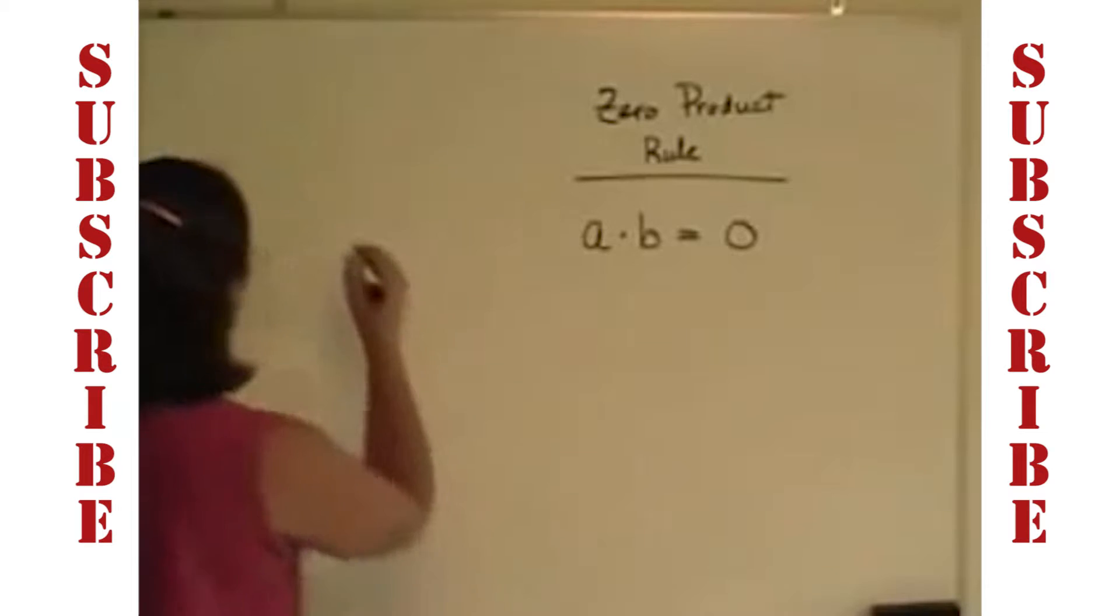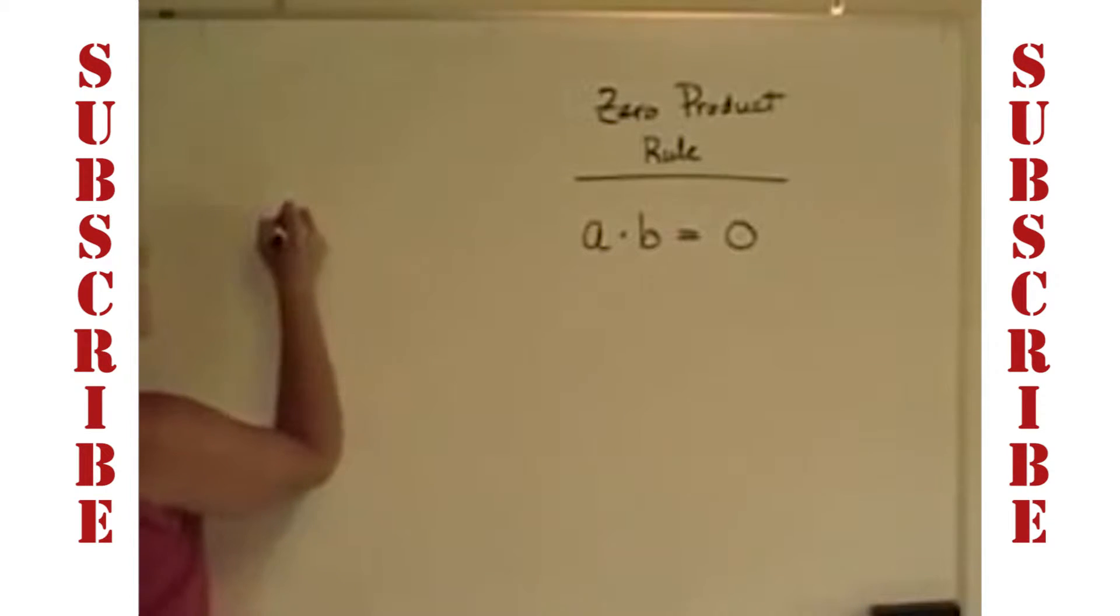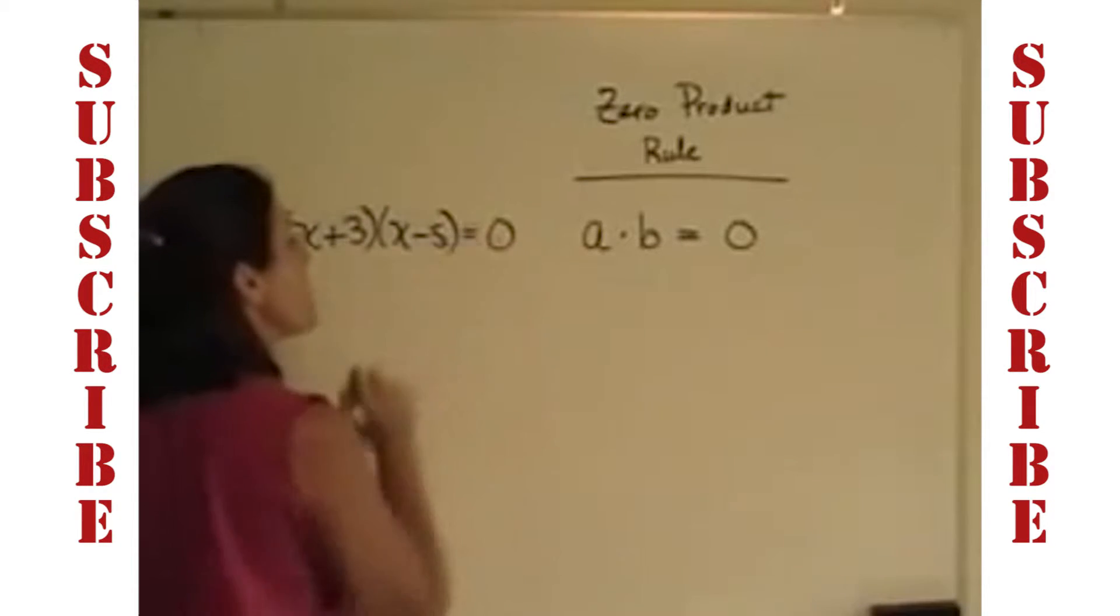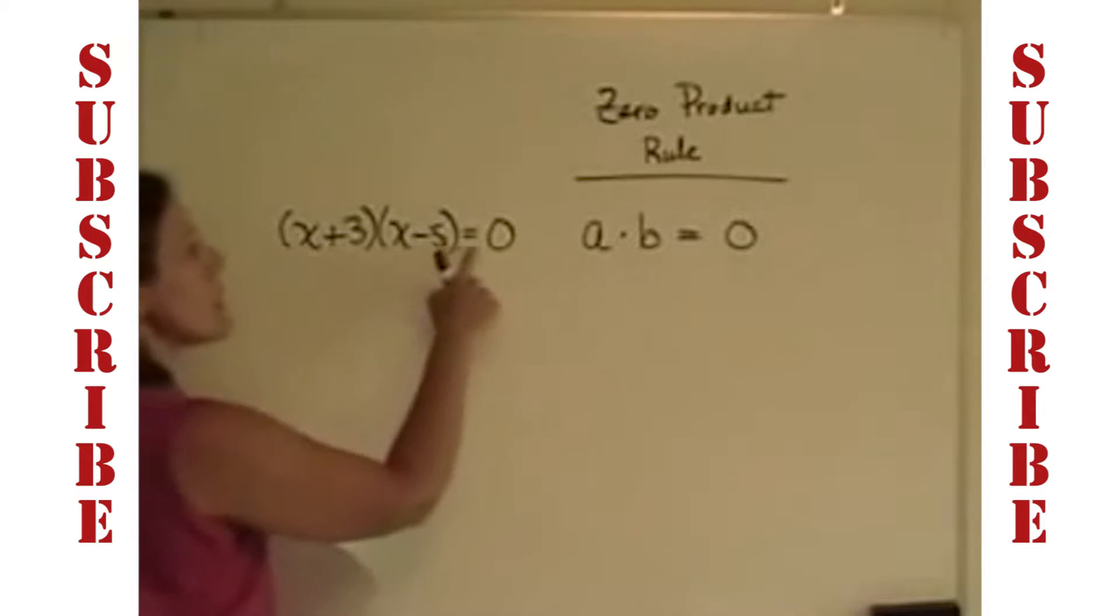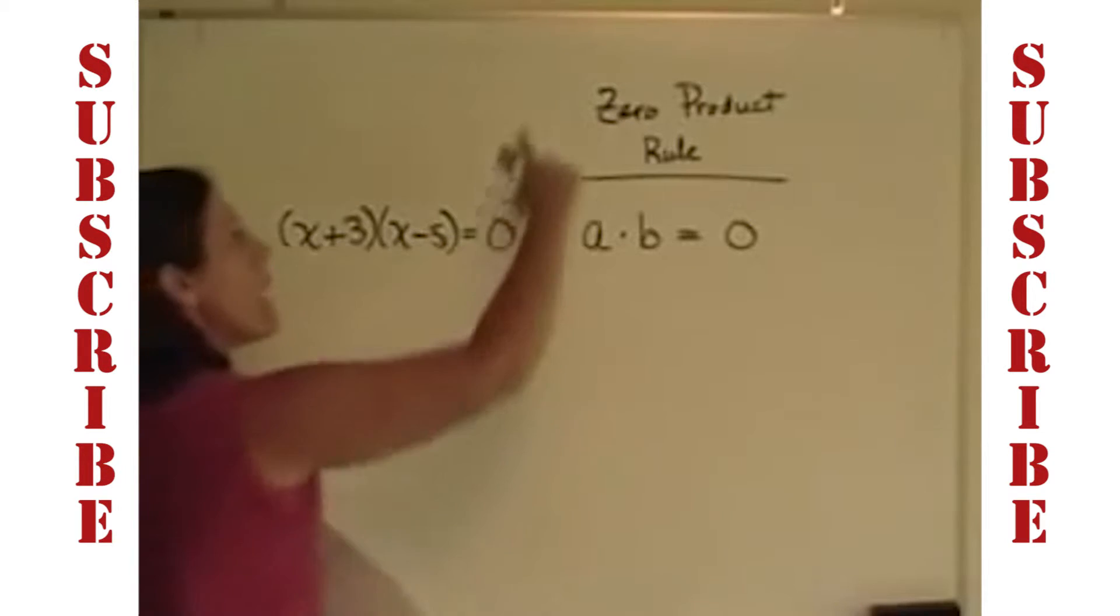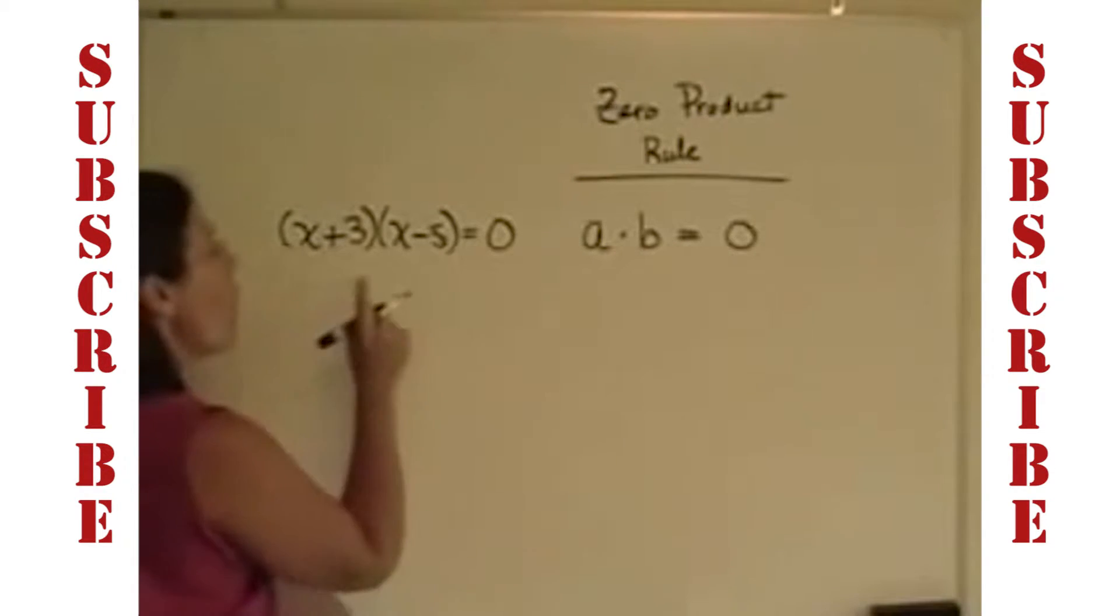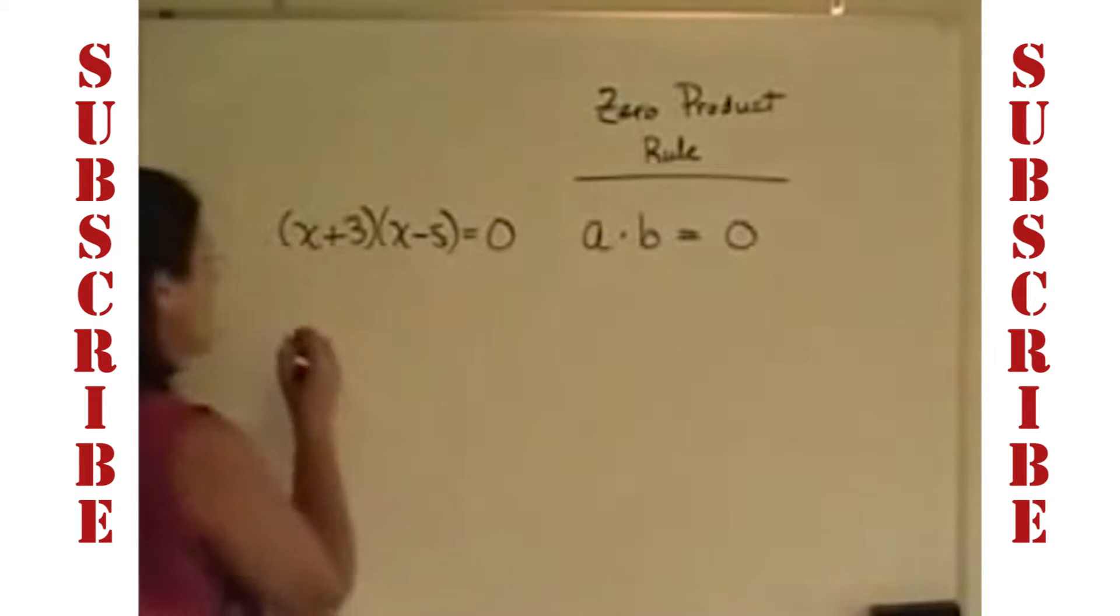Here's how you're going to use that. If you had an algebraic equation that you were trying to solve that was on one side in factored form, and it had an equal sign, and it was equal to zero, then by this zero product rule, we're saying that either this x plus 3 has to equal zero for this to turn out, or x minus 5 has to equal zero.